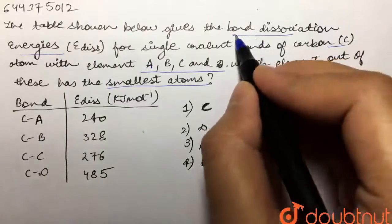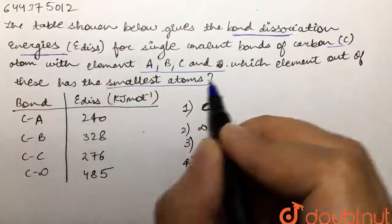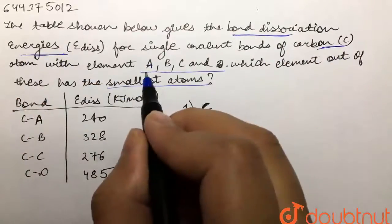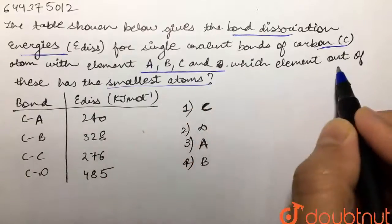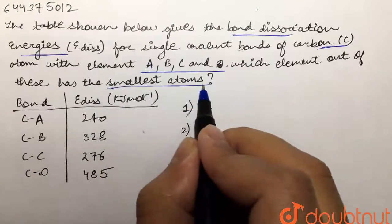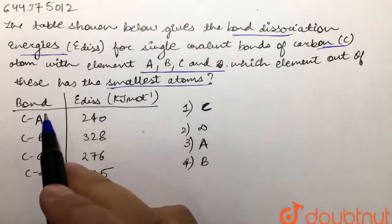below gives the bond dissociation energies for the single covalent bonds of carbon atom with the element A, B, C and D. Which element out of these has the smallest atom? Now over here we are given bonds carbon is